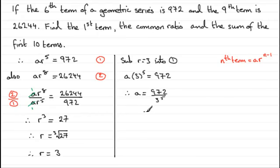And if you work that out on your calculator, you'll find you get that a, the first term, is 4. OK, so we've got the first term now, we've got our common ratio. All we need to do is find the sum of the first 10 terms.